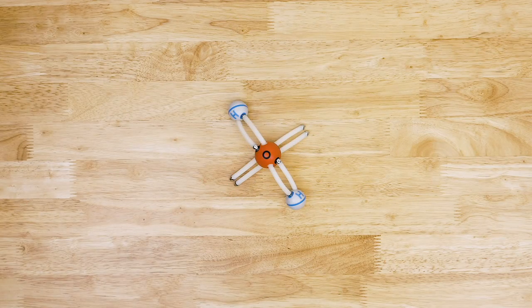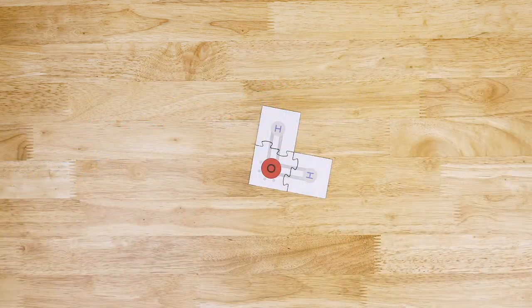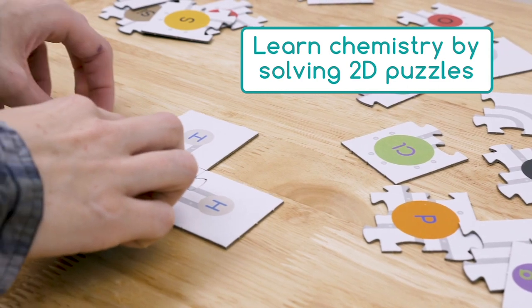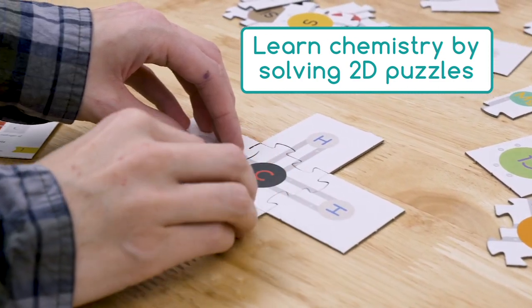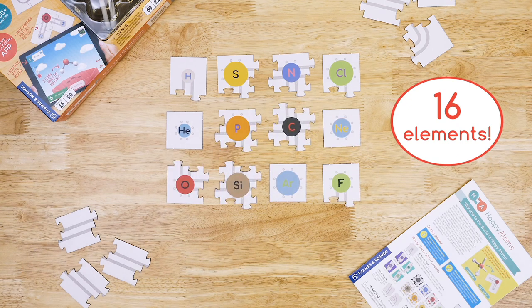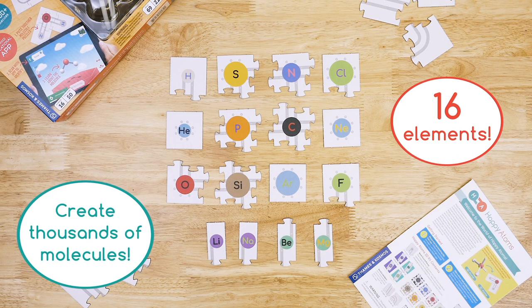Your favorite chemistry building blocks are now puzzle pieces. Introducing Happy Atoms 2D, the molecular modeling tool that helps you learn chemistry simply by solving puzzles. Each puzzle piece represents one of 16 elements which you can combine to build thousands of molecules.